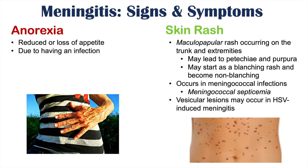Some other skin manifestations can include vesicular lesions, which may occur in HSV-induced meningitis. Herpes simplex virus vesicles can also be noted in some patients who have meningitis if HSV is the causative organism.